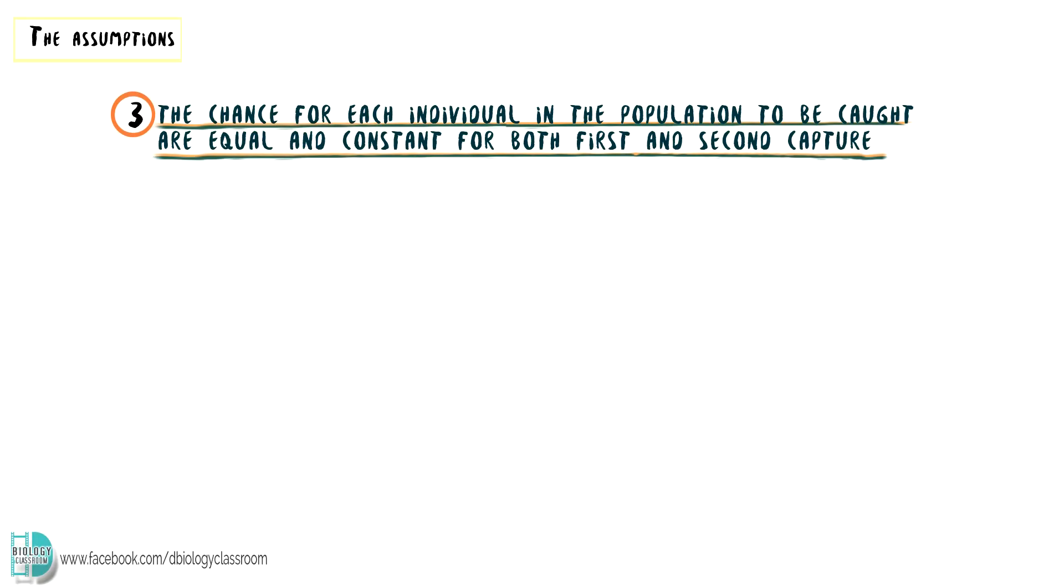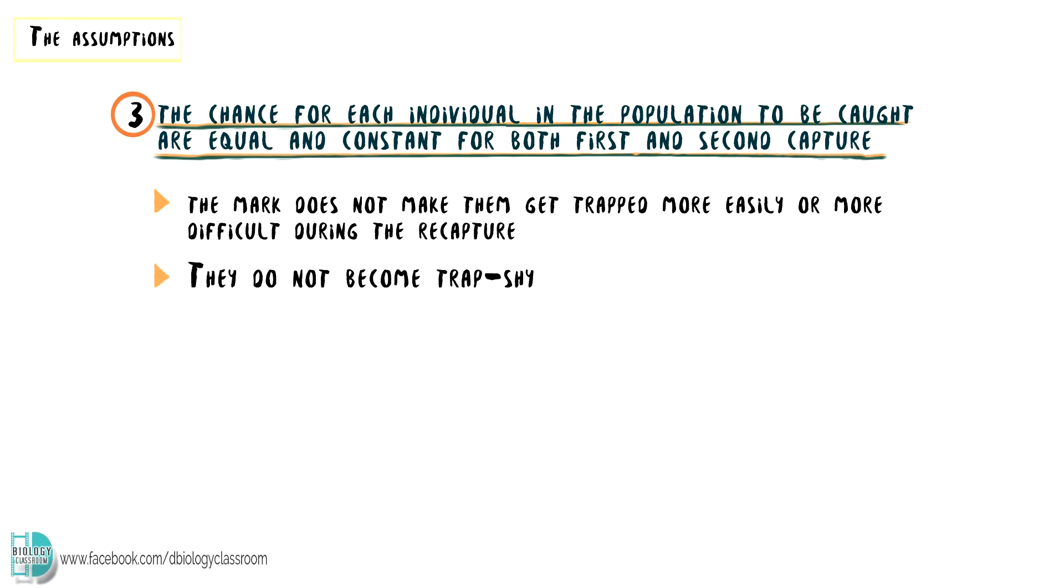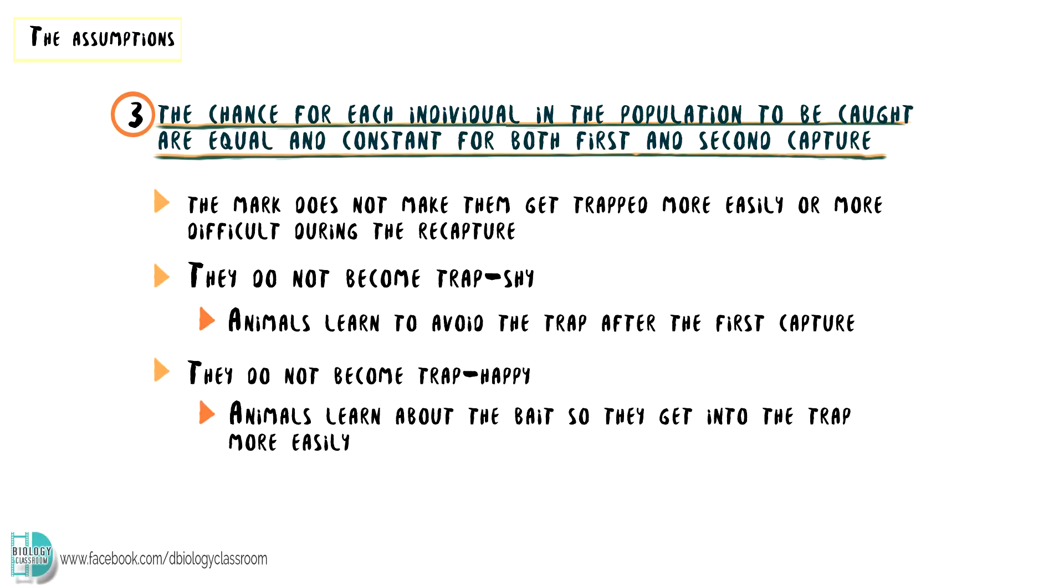The third assumption is that the chances for each individual in the population to be caught are equal and constant for both first and second capture. This means the mark does not make them get trapped more easily or more difficult during the recapture. Some organisms may become trap-shy and learn to avoid the trap after the first capture, while some may be trap-happy and learn about the bait, getting into the trap more easily during the second capture.